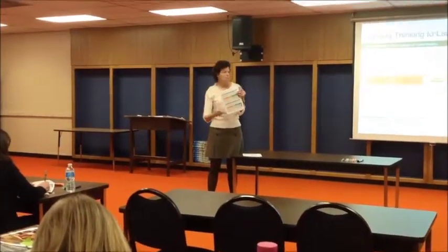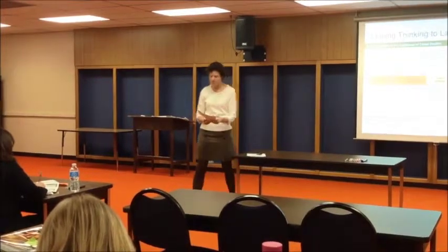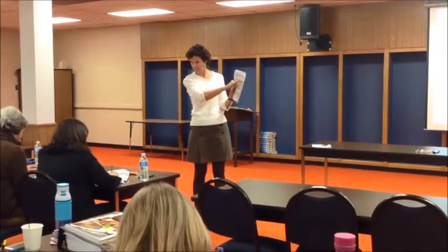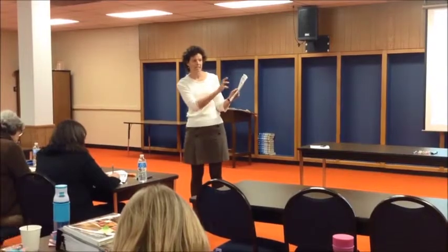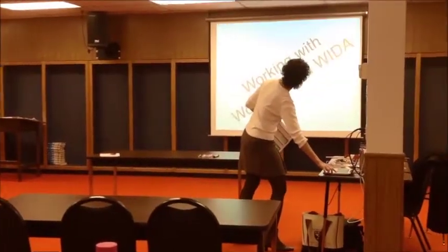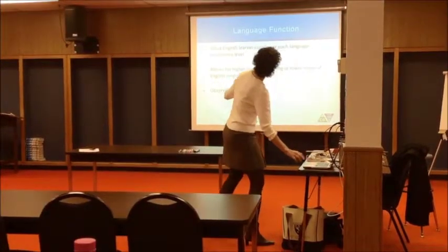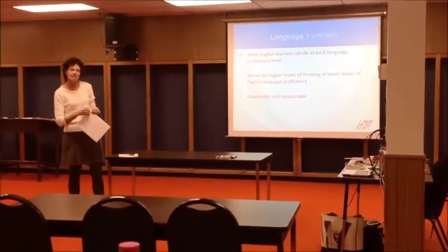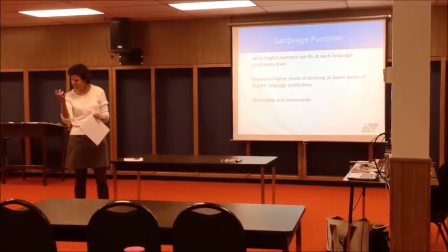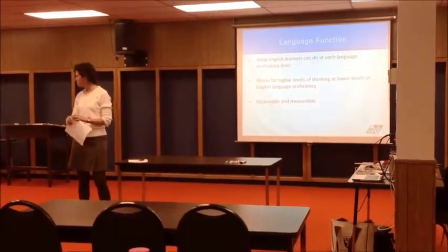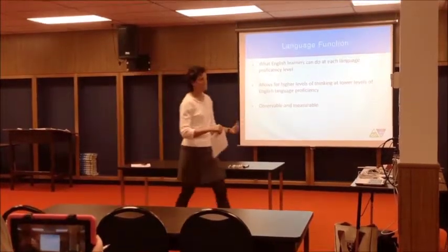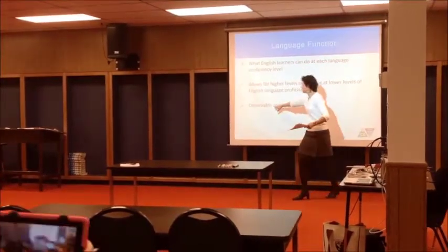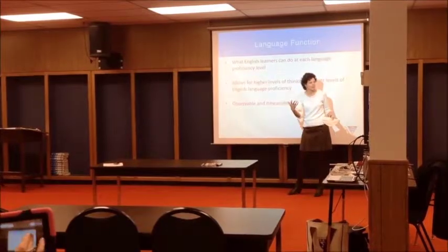I gave you two examples — I copied those from the standards as an example. You can see that the thinking is 'create original items,' but how you're going to create is slightly different. The model performance indicators allow English language learners to get to that higher level of thinking. I wanted to give that insight of how thinking is embedded into our model performance indicators — in the language function and the cognitive function. What the language function does is make thinking observable, and that's what this whole workshop is about: making that thinking visible.